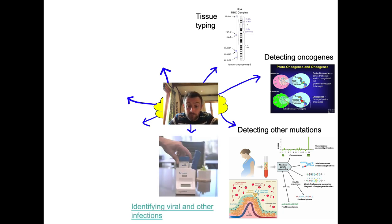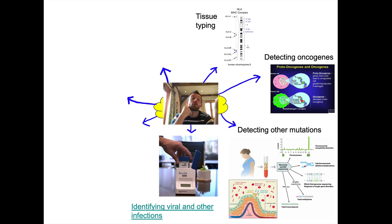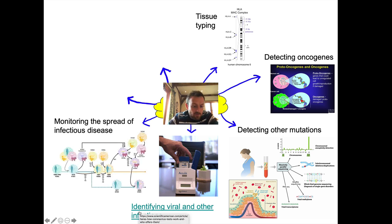Another application is identifying viral and other infections. The coronavirus test includes a PCR-based test: primers are designed to specifically copy coronavirus DNA, and if coronavirus DNA is present in a person's throat swab, it will be copied and detected. I'll attach a Scientific American article in the video description about the two types of coronavirus tests and how they work.